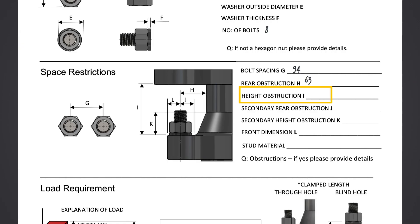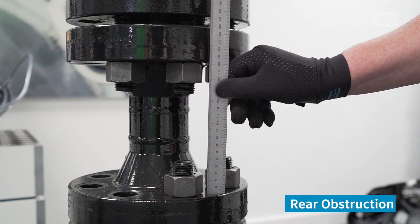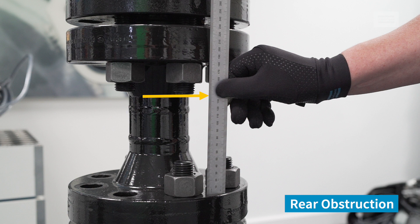Distance between the bottom of the washer and nut and the top of the obstruction, if any. This will give us an indication on if the tool can be mounted onto the stud and highlight design limitations.